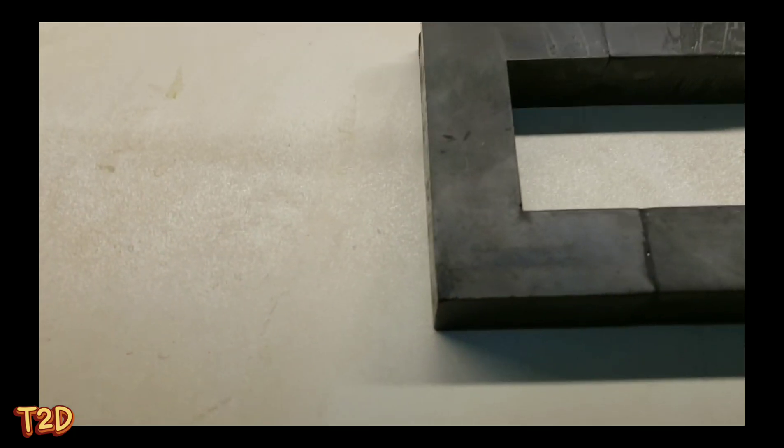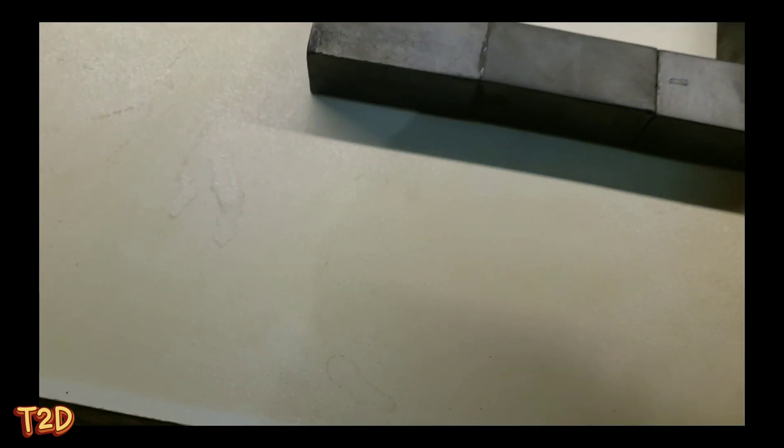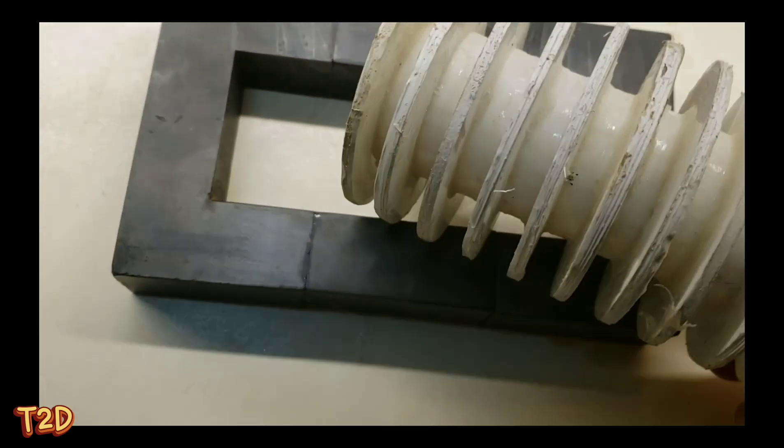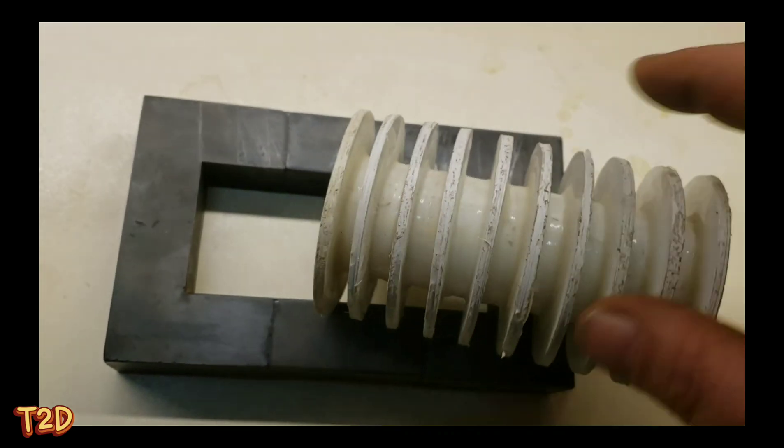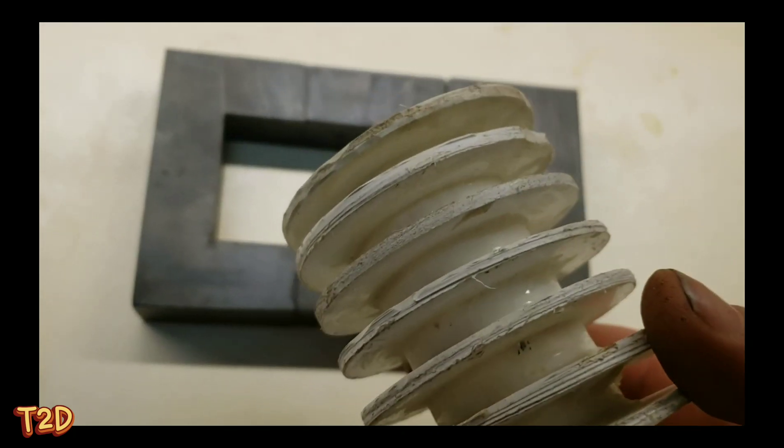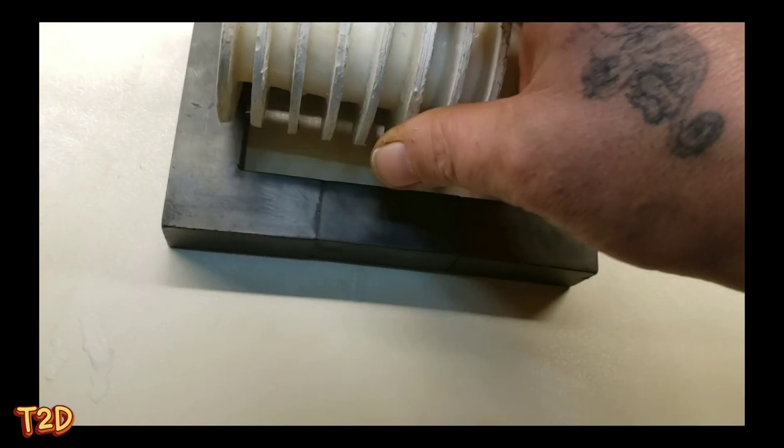What I've done for the actual bobbin is just PVC pipe in the middle and then I've cut out these discs with a core cutter. So then just glued those on. So we've got a bobbin to slide over this.